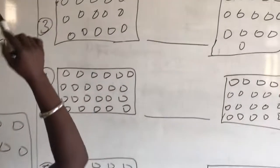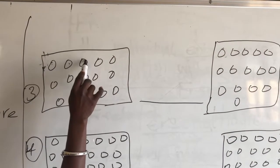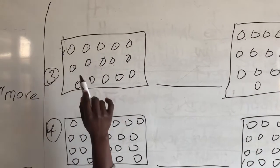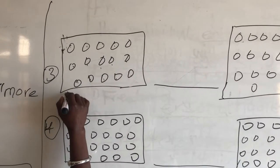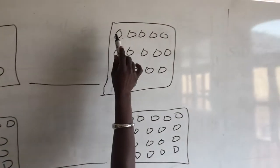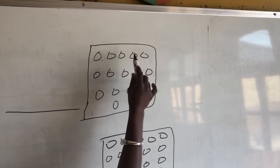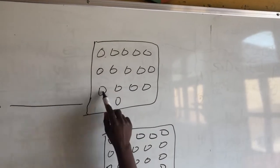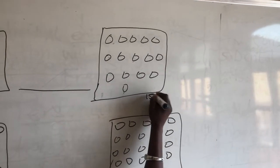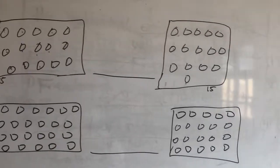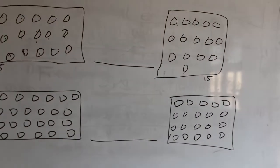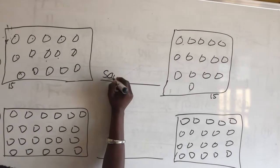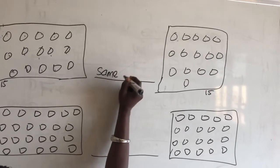Let's go to the third one. Count: 1, 2, 3, 4, 5, 6, 7, 8, 9, 10, 11, 12, 13, 14, 15. The next one is also 15. We have 15 here and 15 here. So what will be your answer? Same as.